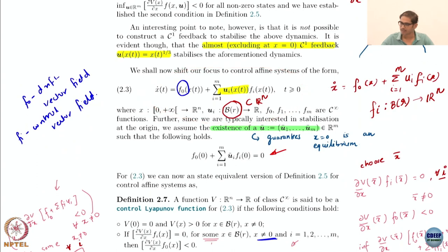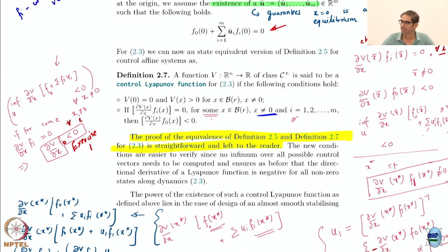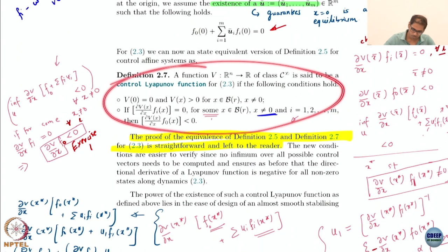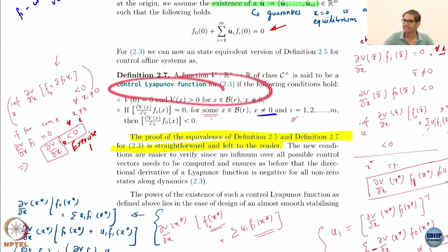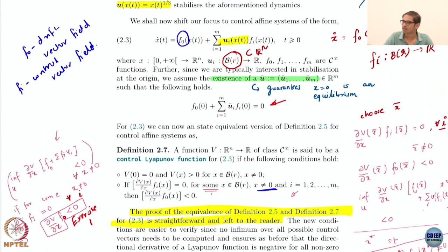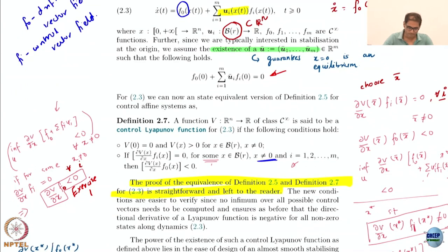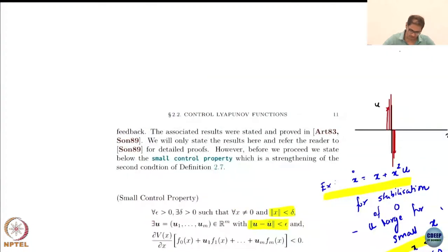We specialized to control affine systems and defined the equivalent version of the control Lyapunov function, and we proved equivalence — at least one side; the other side was assigned as homework. The first condition is exactly the same as before. The second condition changes slightly: it says that if the contributions of the control vector fields are zero, then the drift vector field has to push you in the negative direction — that is, it should make V̇ negative. If not, the system is not stabilizable.